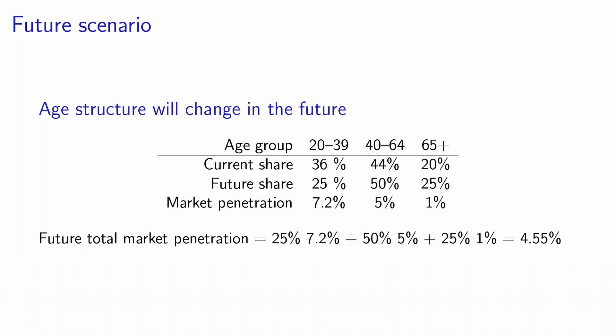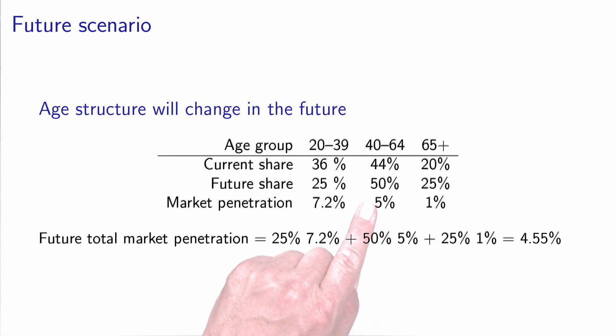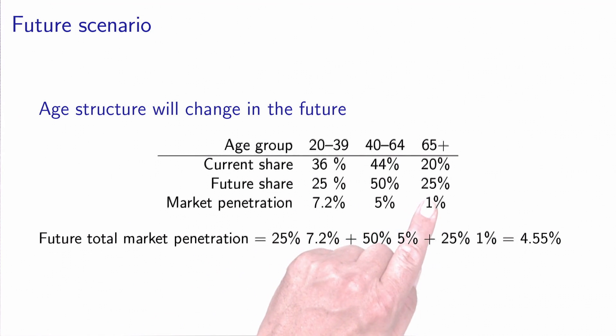If we want to look into the future, we need to look at a future scenario. For example, we can talk to experts in demography who will tell us how the age structure of the population will change in the future. For example, they will tell us that in 5 years from now, 25% of the population will be between 20 and 39, 50% will be between 40 and 64, and 25% will be 65 and above.